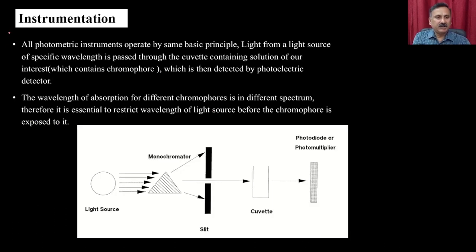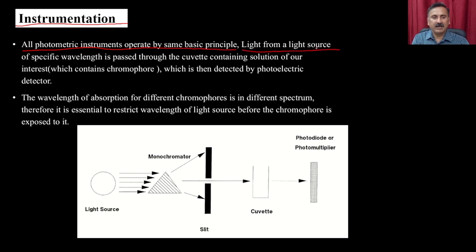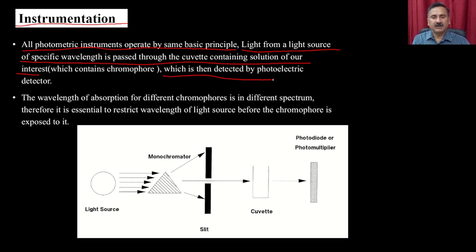Now let's talk about the instrumentation of the spectrophotometer. All photometric instruments operate by the same basic principles: light from a light source of a specific wavelength is passed to the cuvette containing solution of interest, which is then detected by the photometric detector.